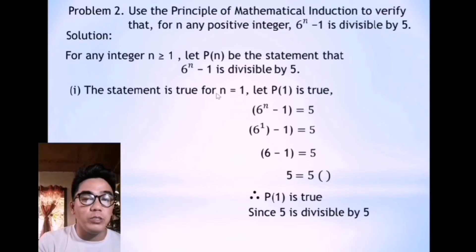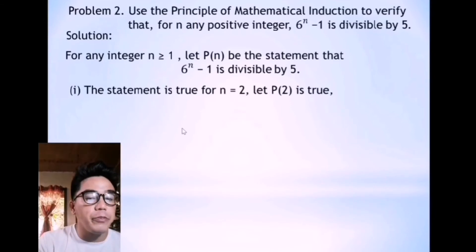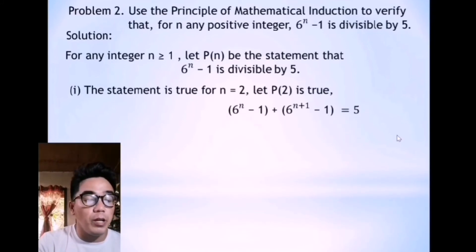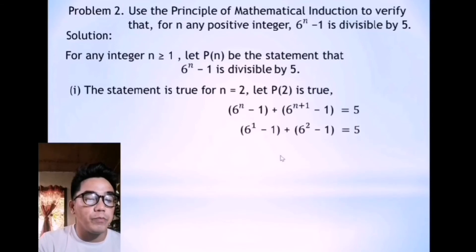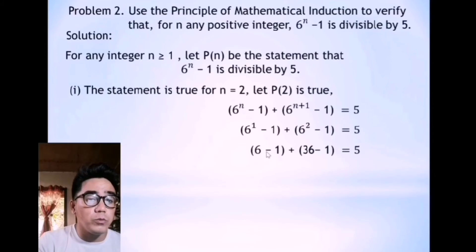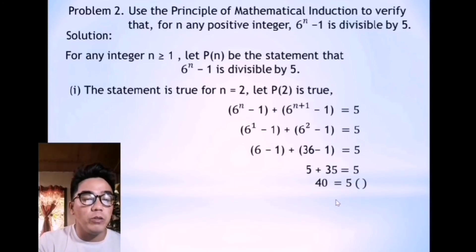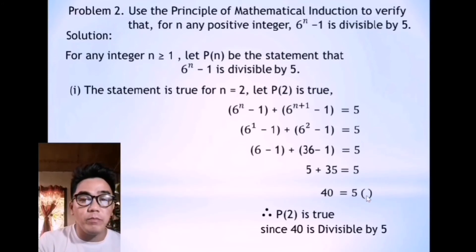Now let us have n as 2. When n increases, the number of terms also increases. We have the new equation: 6 to the power of n minus 1 plus 6 to the power of n plus 1 minus 1 equals 5. Substituting n equals 1: 6 to the power of 1 minus 1 plus 6 to the power of 2 minus 1. So 6 minus 1 is 5, and 36 minus 1 is 35. Adding 5 plus 35 gives 40, and 40 is divisible by 5 — that is, 5 times 8. So P of 2 is true since 40 is divisible by 5.